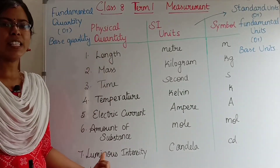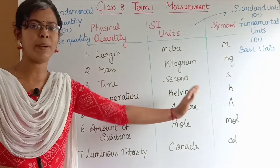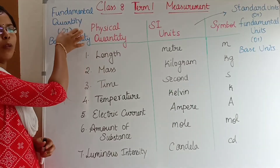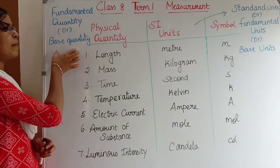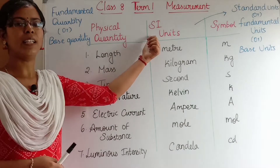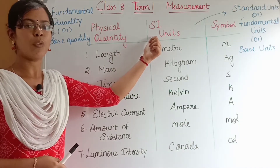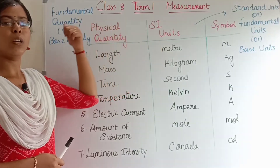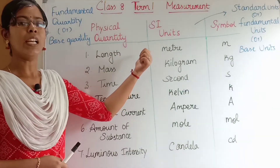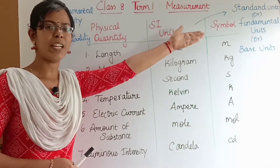Here, I have written seven physical quantities and their corresponding units and symbols. The physical quantities are otherwise known as fundamental quantities or base quantities. Their corresponding standard units are the SI units, also called fundamental units or base units.